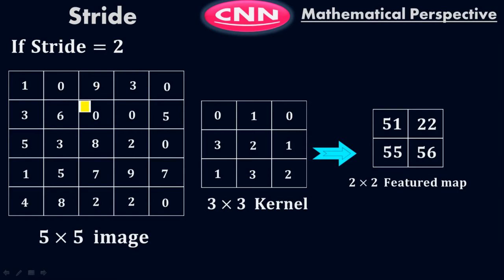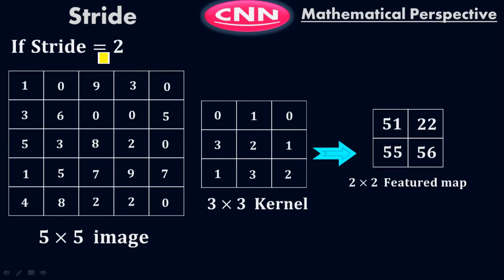You pick this 3x3 matrix out of the 5x5 image, take the product with the kernel, do the summation, and you get 51. Then leave two columns because stride equals 2, pick this 3x3 matrix, take the product with the filter, do the products and summation, you get 22. Then leave two rows because stride equals 2, pick this 3x3 matrix with the kernel, you get 55. Then leave two columns again and take this 3x3 matrix with the kernel, you get 56. So it is a 2x2 feature map.